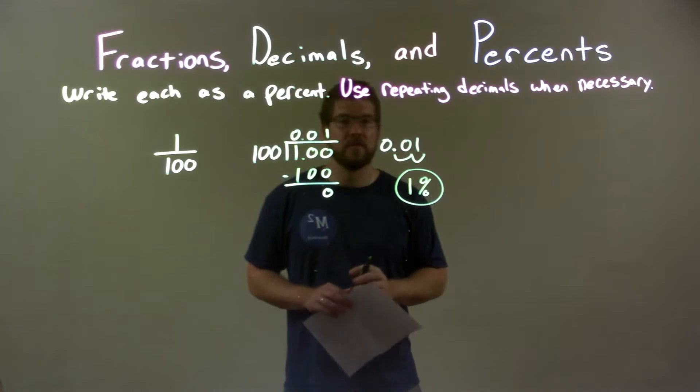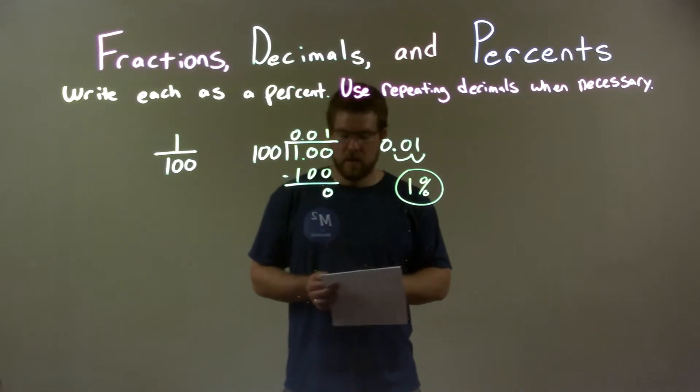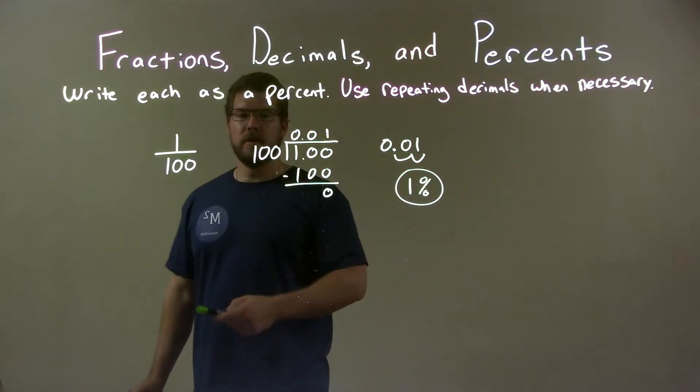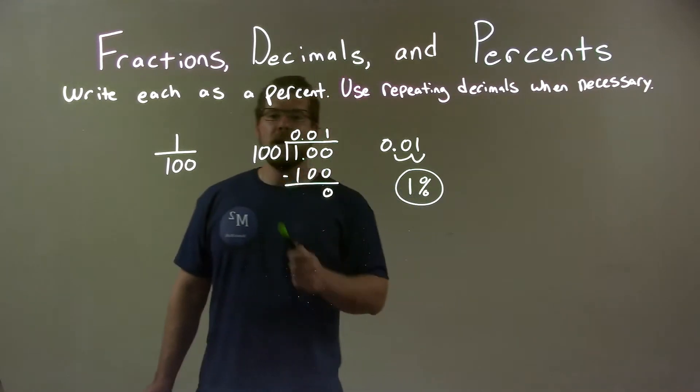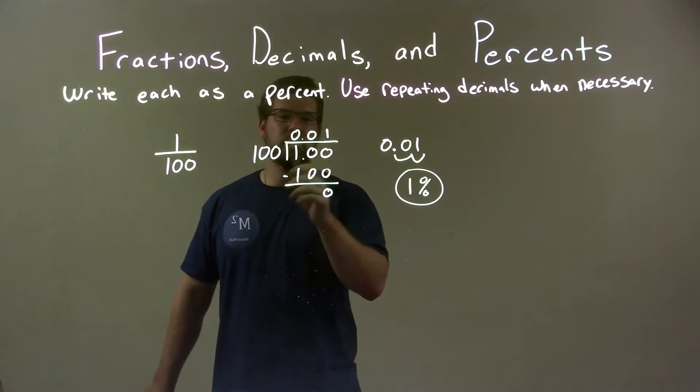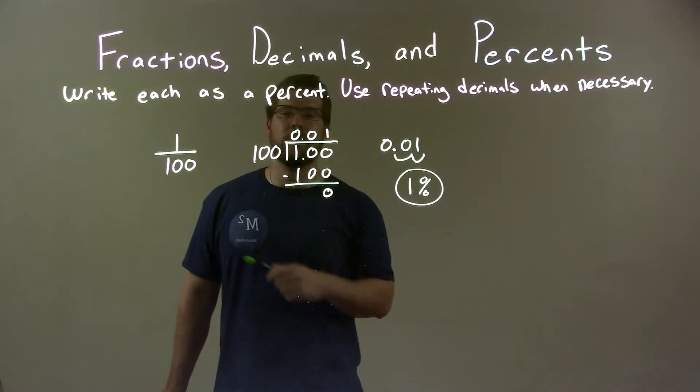Our final answer here is just 1%. So, quick recap, we're given 1 over 100 and we have to write that as a percent. I did a long division of 100 into 1 and I got 0.01.